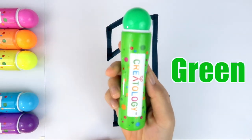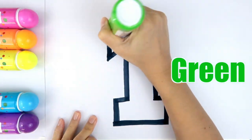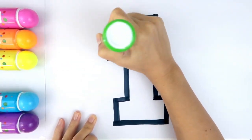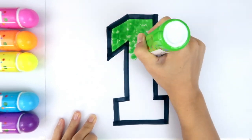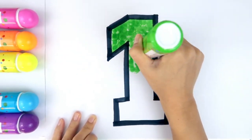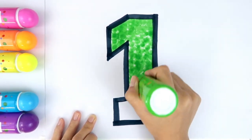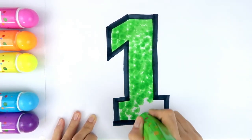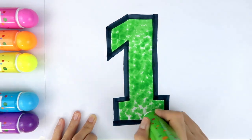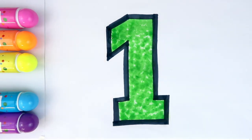Let's use green dot marker to color number one. One.